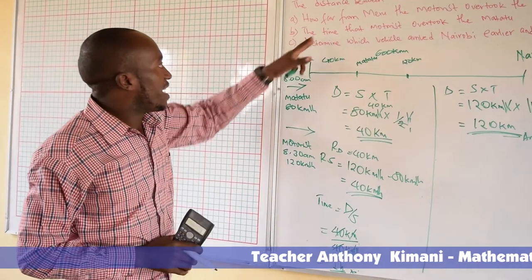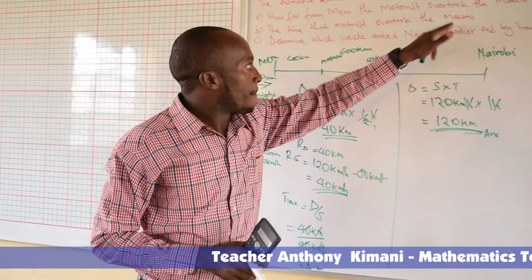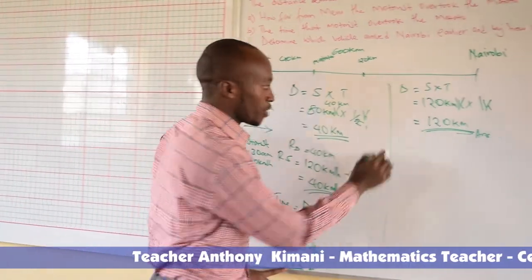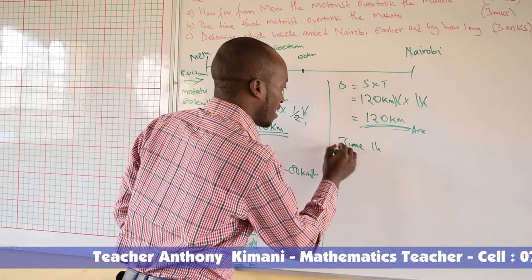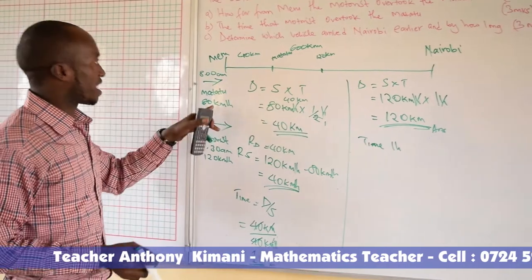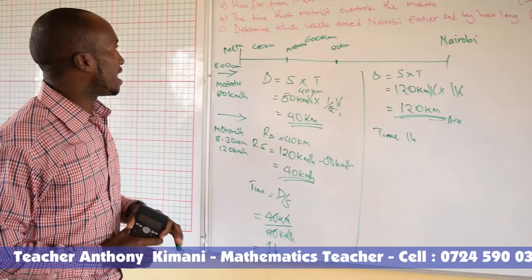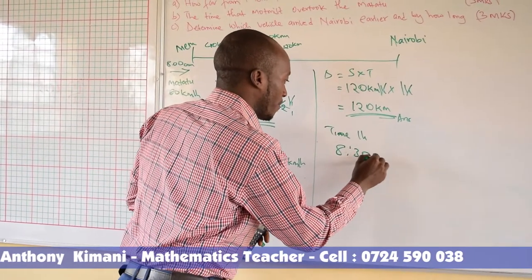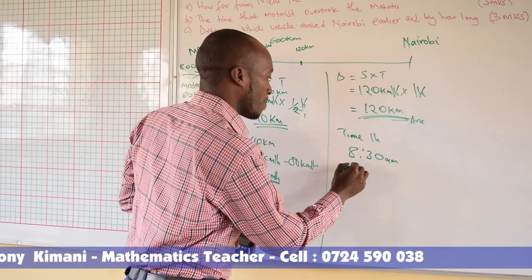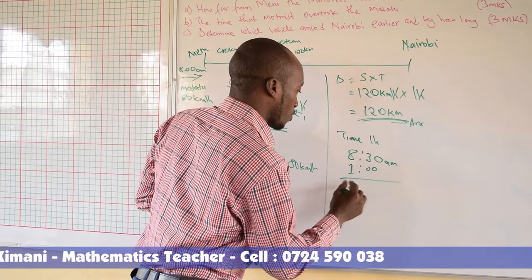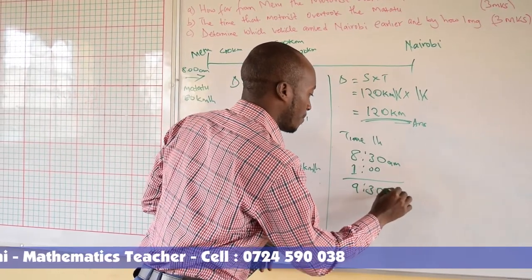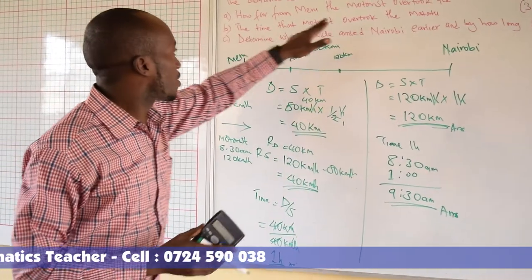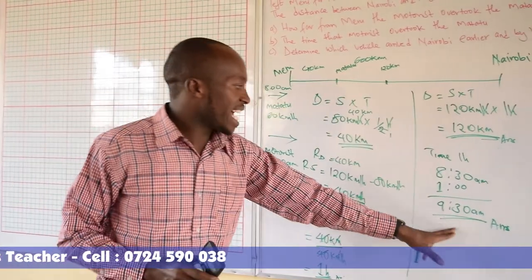We proceed to the next question: the time that the motorist overtook the Matatu. We already calculated it took 1 hour. The latest departure time was 8:30 am, so we add 1 hour — it will be at 9:30 am. That is the time of day that the motorist overtook the Matatu.